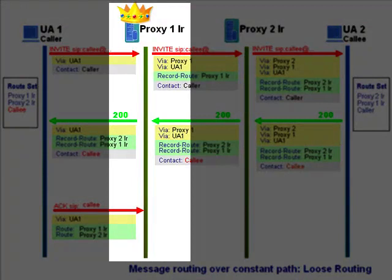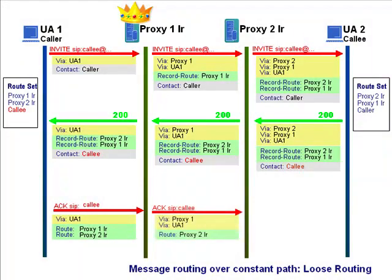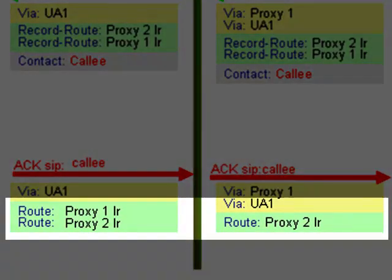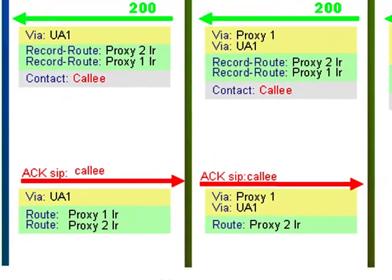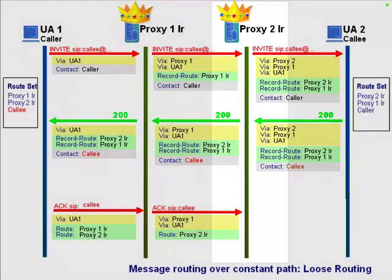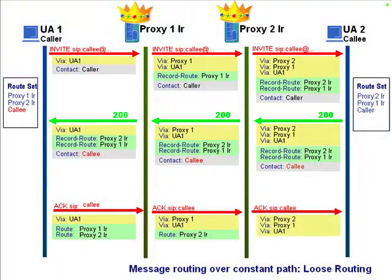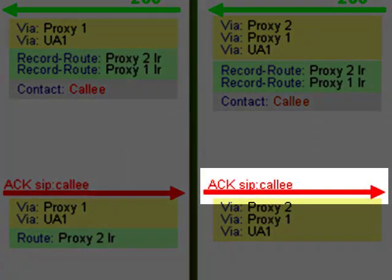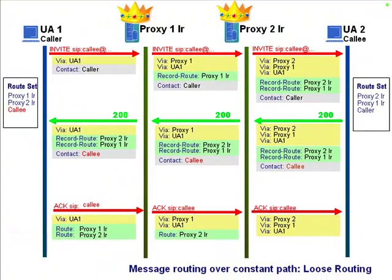When proxy one receives it, he gets excited that the user agents have followed his decree and routed subsequent requests to him — now he has an opportunity to look at the request and do something clever: start the billing timer, update presence status, or whatever he wants. After he's done, he strips off his own address from the Route header list and sends the request downstream. When proxy two receives the request, he too performs some processing before forwarding on downstream, and also strips off the Route header containing his own address. With no remaining Route headers left, the Request-URI once again takes precedence, and the request is routed directly to the callee.